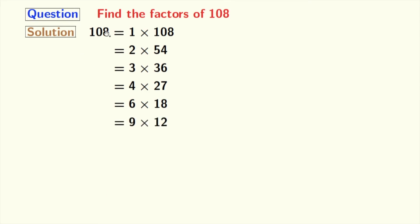Next comes 9 and we have 9 times 12 equal to 108. Between 9 and 12 comes 10 and 11, but these two numbers do not divide 108. Next number is 12 which is already here.